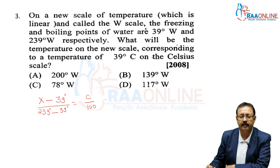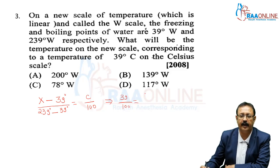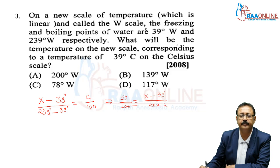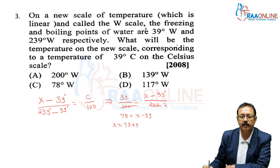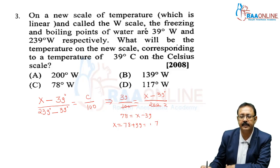We want to find what 39 degrees Celsius equals in the W scale. Substituting C = 39: (X − 39) / 200 = 39 / 100. So X − 39 = 78, giving X = 78 + 39 = 117 degrees W. So we are going with option D. This problem was asked in AIPMT 2008.